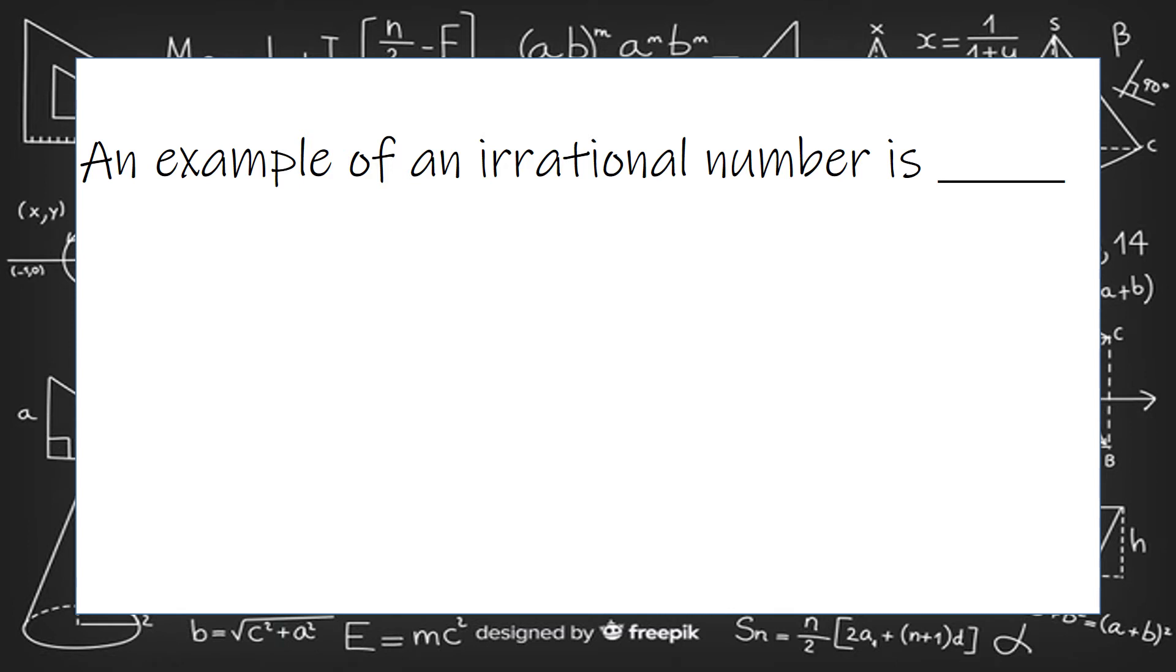An example of an irrational number is blank. That's our question. So the first thing we need to look at is what a rational number is. An irrational number is any number that can be written as a fraction. So it could be 5 over 33 or 1 over 2 or 9 over 1.